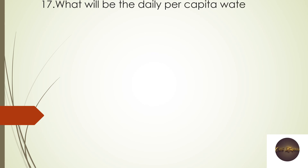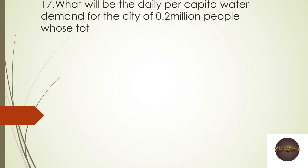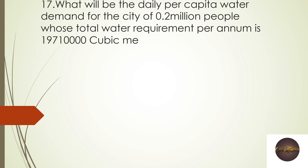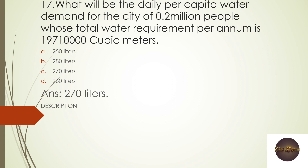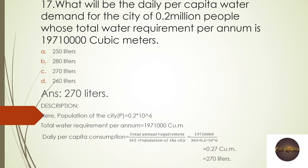Next question: What will be the daily per capita water demand for a city of 0.2 million people whose total annual water requirement is 17,100,000 m³? Options: 150 liters, 280 liters, 270 liters, 260 liters. Note: 1 cubic meter contains 1000 liters. The right answer is 270 liters.